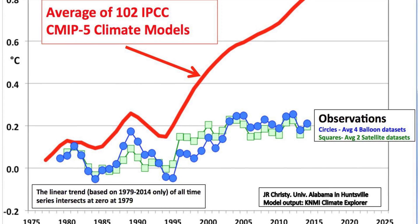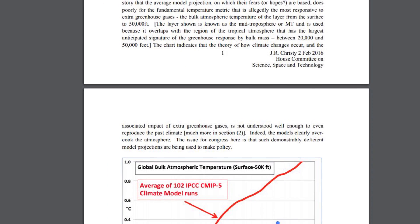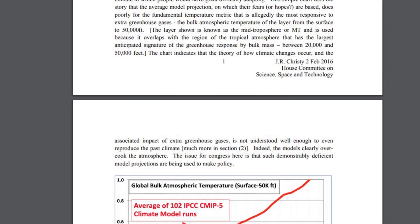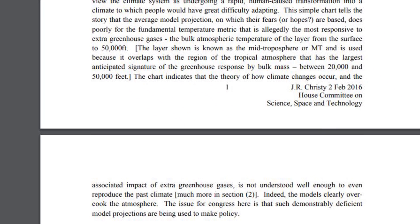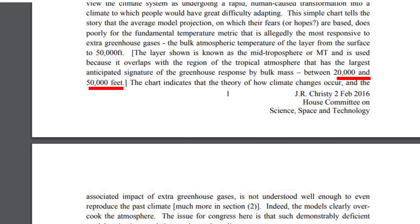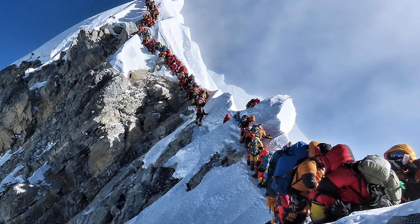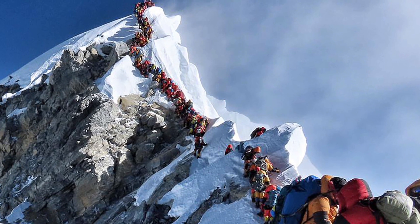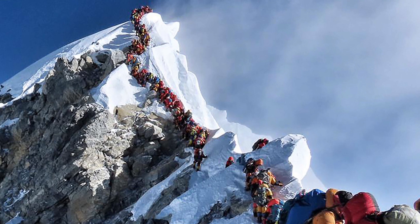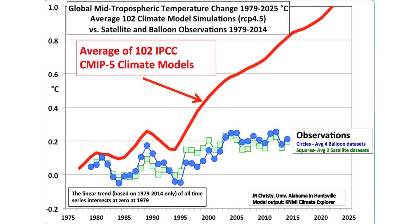When looked at more closely — for instance by reading the congressional testimony of John Christie — I quickly found out that the comparison shown is not about surface temperatures but about the mid troposphere. As Christie states, this is between 20,000 and 50,000 feet, or 6 to 15 kilometers. Not exactly the place where humans live, unless you have a house on Mount Everest. And it is usually not clearly explained when the graph is shown. But putting aside — and not forgetting — that this is cherry-picked data, the discrepancy between projections and observations is still striking.